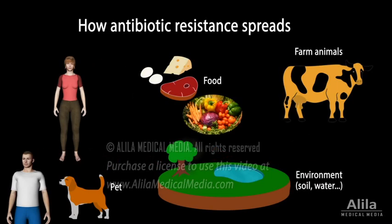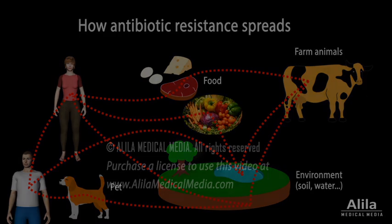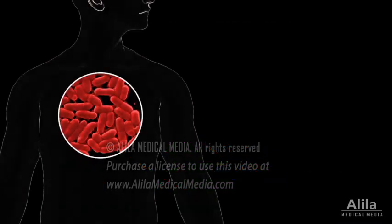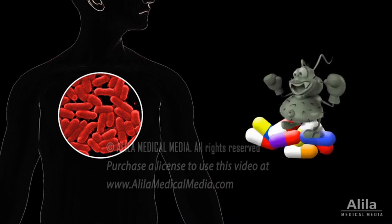These antibiotic-resistant bacteria can infect humans and animals, and spread between them through food and the environment. Antibiotic resistance is one of the biggest global health concerns. Infections by antibiotic-resistant bacteria are much harder, sometimes impossible to treat. Some bacteria, called superbugs, are resistant to most of the common antibiotics and are especially difficult to kill. Treatments for infections caused by such bacteria are costly and toxic to the patients.